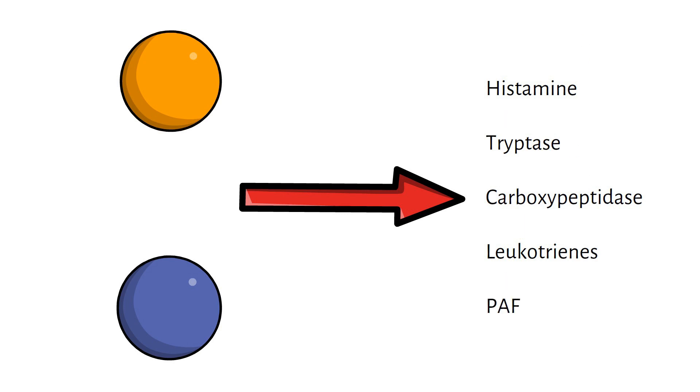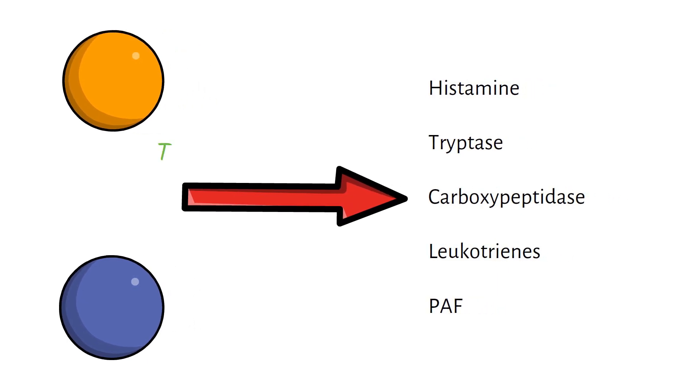All of this process is mediated by cross-linking of IgE, and that's why anaphylaxis is called a type 1 hypersensitivity reaction.